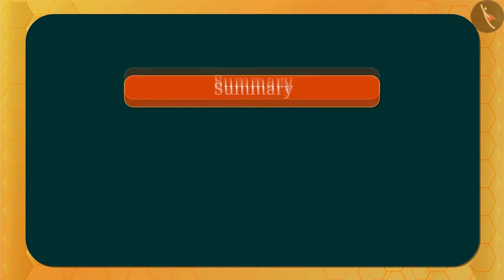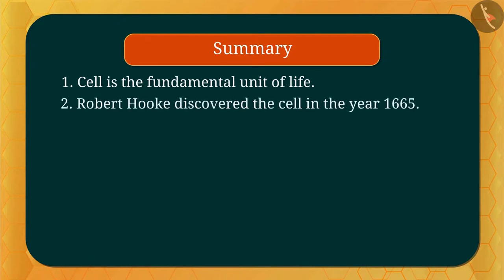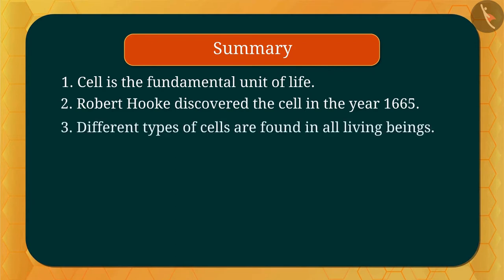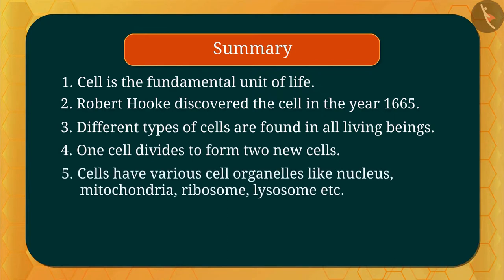So friends, this is all about the structure of the cell. What did we learn in this video? Cell is the fundamental unit of life. Robert Hooke discovered the cell in the year 1665. Different types of cells are found in all living beings. One cell divides to form two new cells. Cells have various cell organelles like nucleus, mitochondria, ribosome, lysosome, etc. Now we will learn about cell envelope and osmosis.